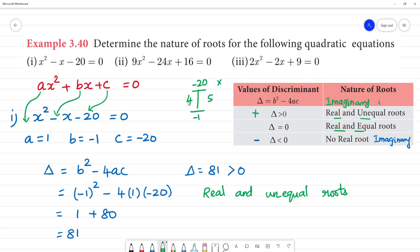So 4 into 5, 4 times 5 is 20. So the roots are x plus 4, x minus 5, that is equal to 0. So we have x equal to minus 4 or x equal to 5. These are real numbers. Positive numbers or negative numbers are real numbers. This is real and unequal. It is minus 4, it is 5.